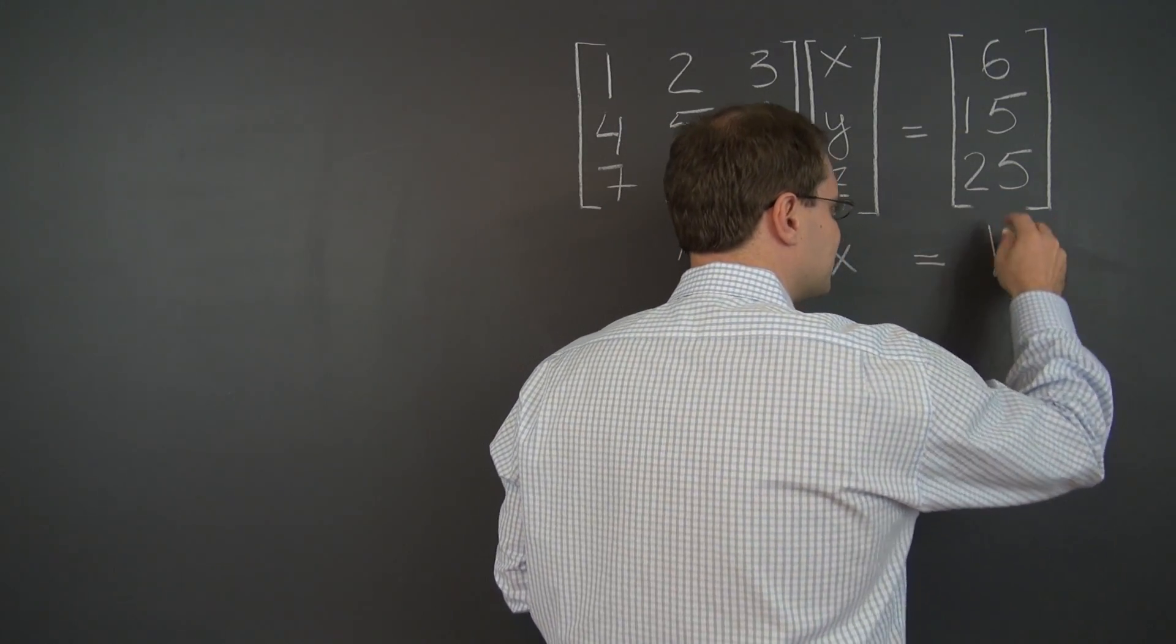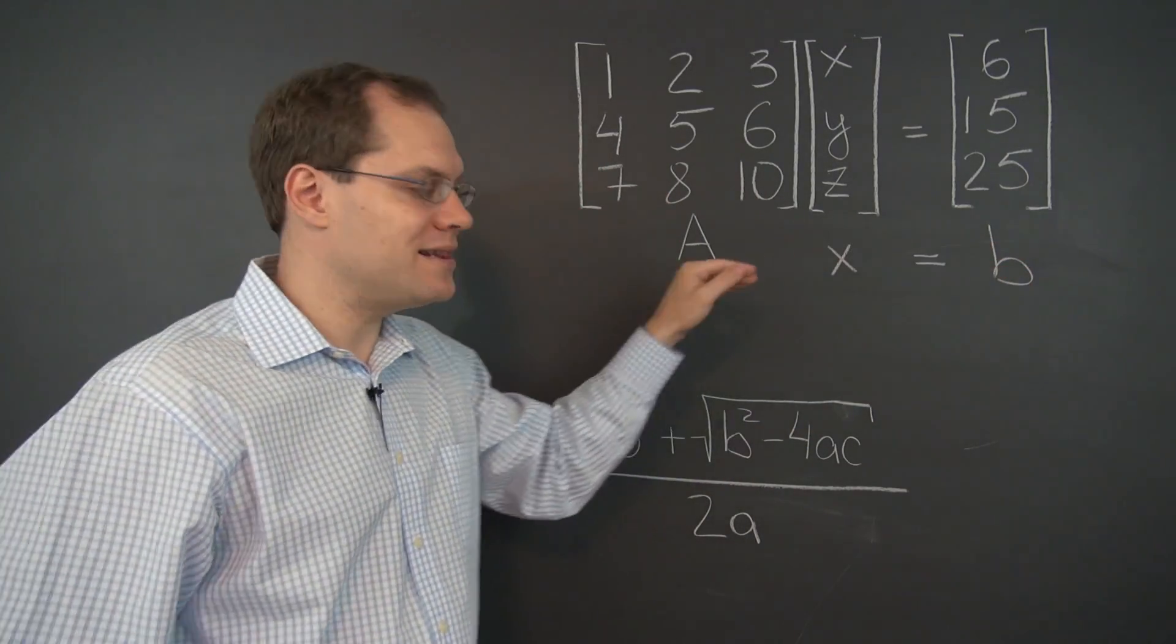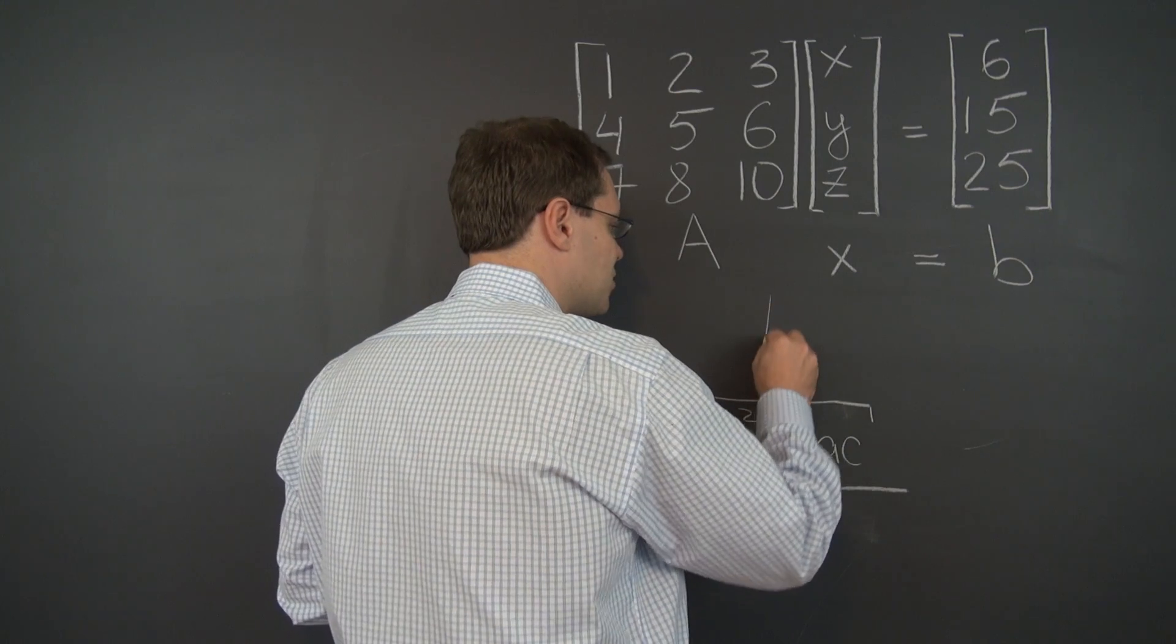Equals. And once again a lowercase letter because this is just a single column. B. And we will write this system as AX equals B.